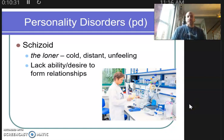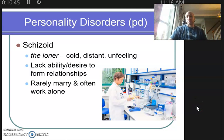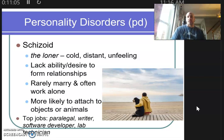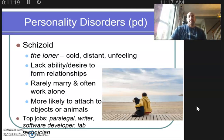Schizoids don't mind that they lack the ability to want to be with other people. They lack the desire to form or hold a relationship, so schizoids rarely marry and often work alone. They tend toward jobs where they're isolated with little social interaction. When they do have social interactions, they're often with non-human beings — like objects, say a guitar, or more likely a strong attachment to an animal.